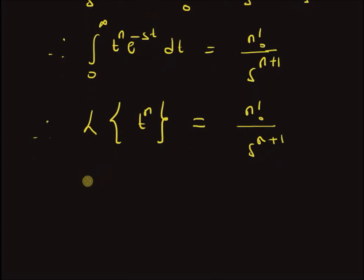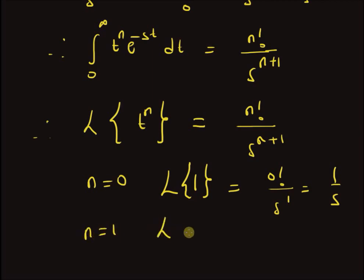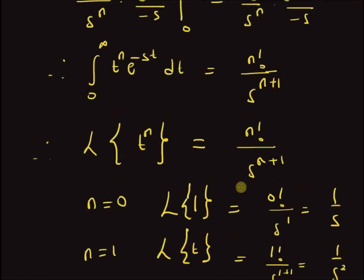For the special case n = 0, the Laplace transform of the constant 1 equals 0!/s^1 = 1/s. Similarly, the Laplace transform of any constant a equals a/s. For n = 1, the Laplace transform of t equals 1!/s^2 = 1/s². Therefore the Laplace transform of t is 1/s². Thanks for watching.